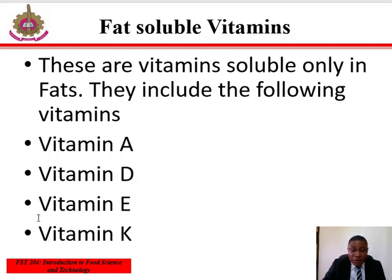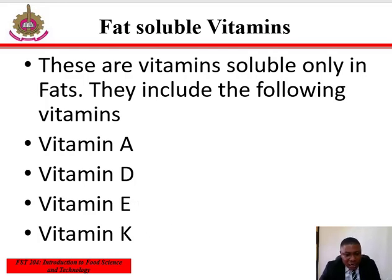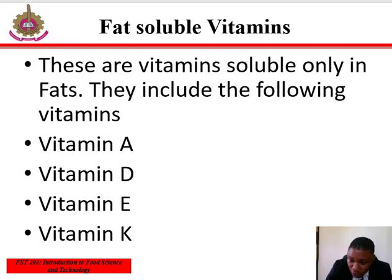The fat-soluble vitamins are vitamins that are directly dissolved in fats. They include vitamin A, vitamin D, vitamin E, and vitamin K. Vitamin A is found in animal food, especially in the liver of animals and fish. It exists in a variety of forms, including retinol, which is currently considered the most active form.